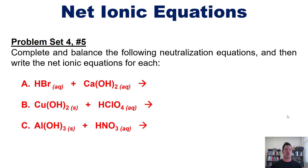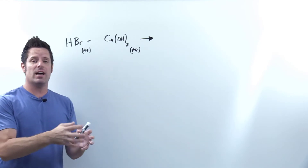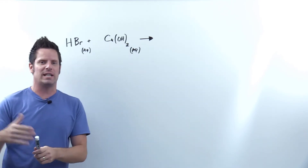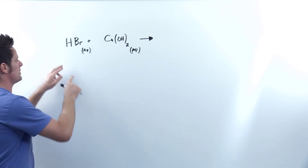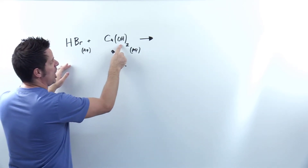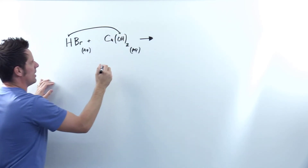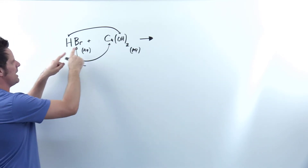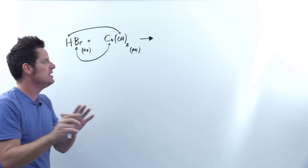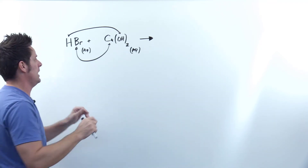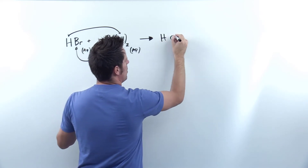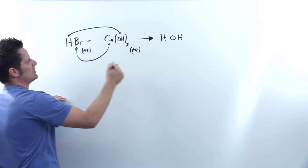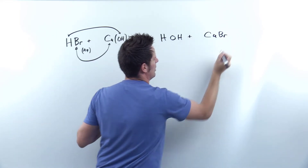The process for writing a net ionic equation for an acid-base reaction is identical to what we saw earlier. First, we do our partner swap. Here I have H on the left (in HBr) and OH on the right (in Ca(OH)₂), so H gets together with OH. Then calcium from the right compound gets together with bromine from the left compound. When doing the partner swap, I do not initially bring subscripts along — I leave them behind. So H gets together with OH to give HOH, and calcium gets together with bromide to give calcium bromide (CaBr).